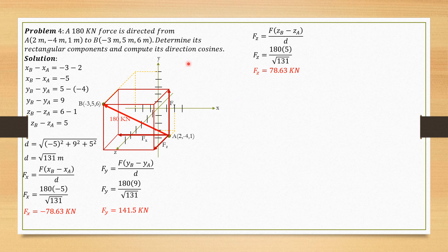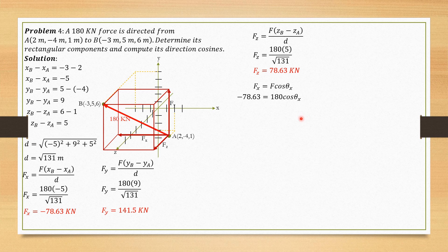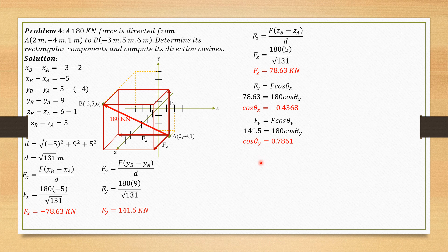For the direction cosines, we compute cos θx, cos θy, and cos θz — not the angles, since the problem requires direction cosines. Since Fx = F cos θx, cosine θx is -78.63 / 180, which equals -0.4368. Cosine θy is 141.5 / 180, which equals 0.7861. Cosine θz is 78.63 / 180, which equals 0.4368, positive this time.